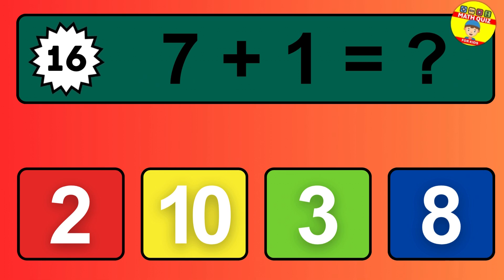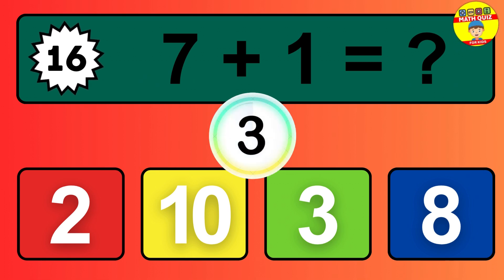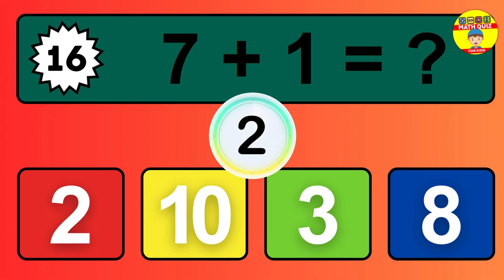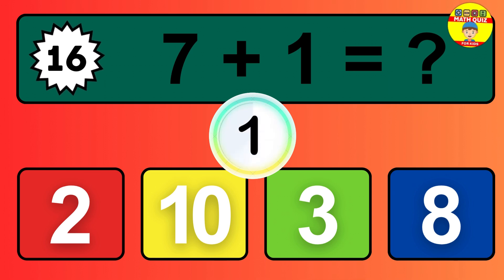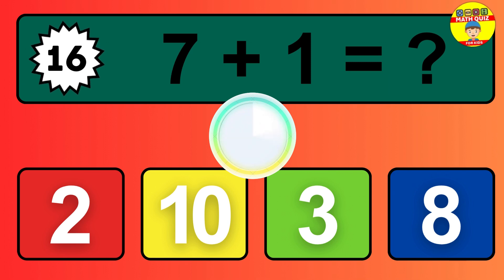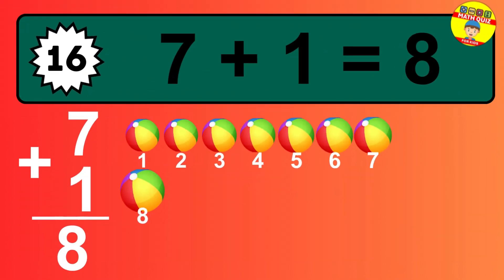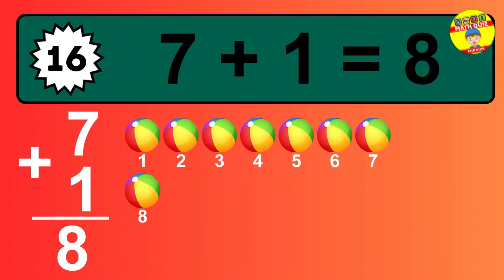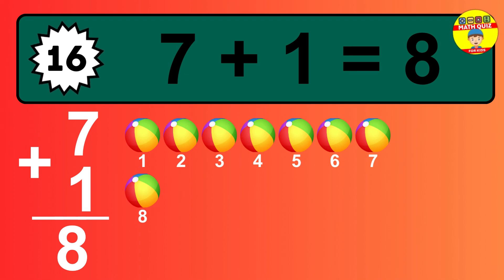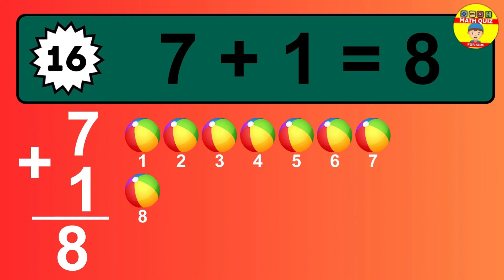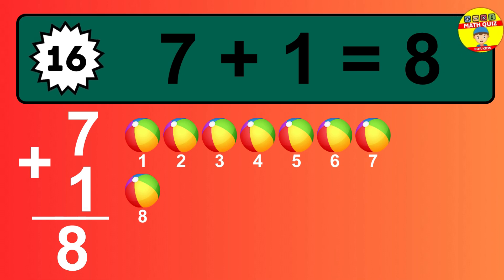Question 16. 7 plus 1 equals what? The answer is 7 plus 1 is 8. Let's count it. 1, 2, 3, 4, 5, 6, 7, 8.